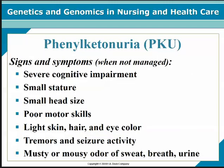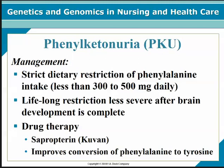Signs and symptoms of PKU, if not managed: severe cognitive impairment, small stature, small head size, poor motor skills, light skin, hair and eye color, tremors and seizure activity, and a musty or mousy odor of the sweat, breath, and urine. Management is a very strict dietary restriction of phenylalanine intake — a special medical formula for babies born with this. It's a lifelong restriction, less severe after brain development is complete. There is some drug therapy that will improve the conversion of phenylalanine to tyrosine: sapropterin or Kuvan, which is, of course, expensive.